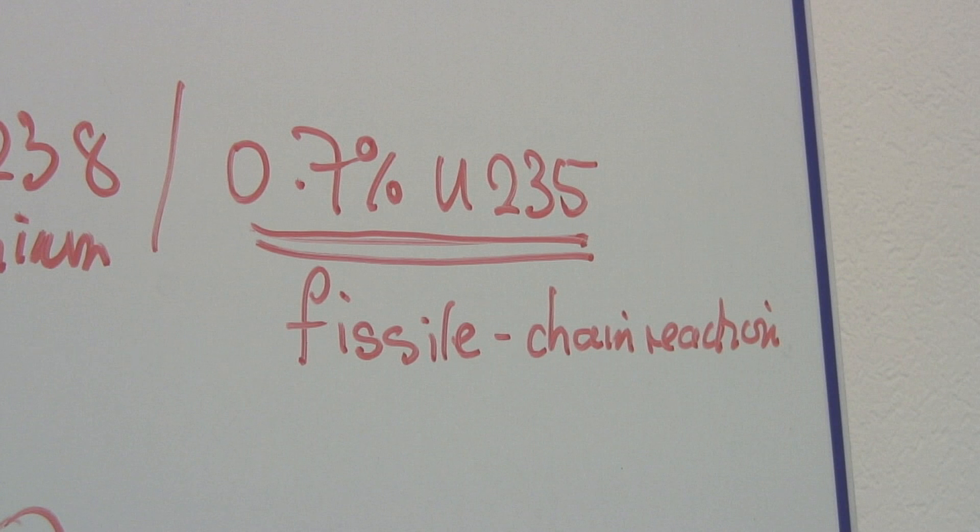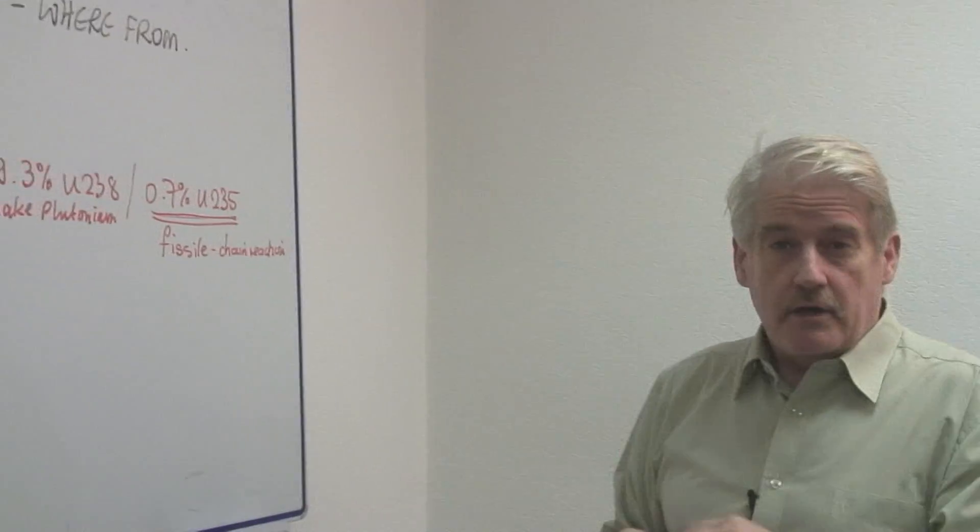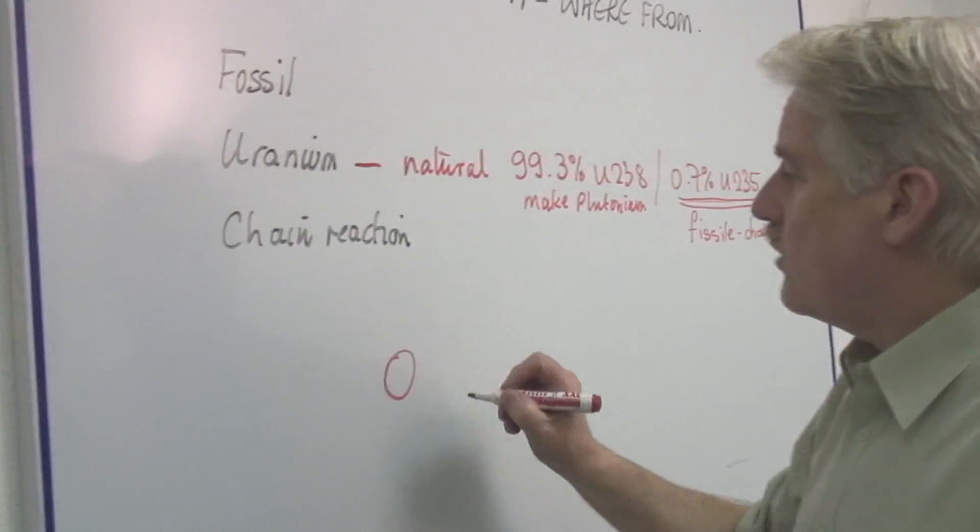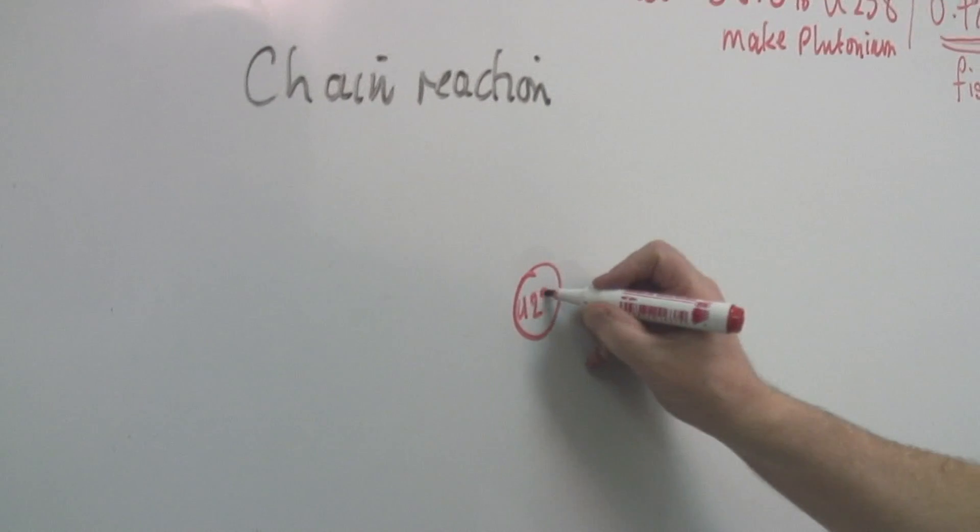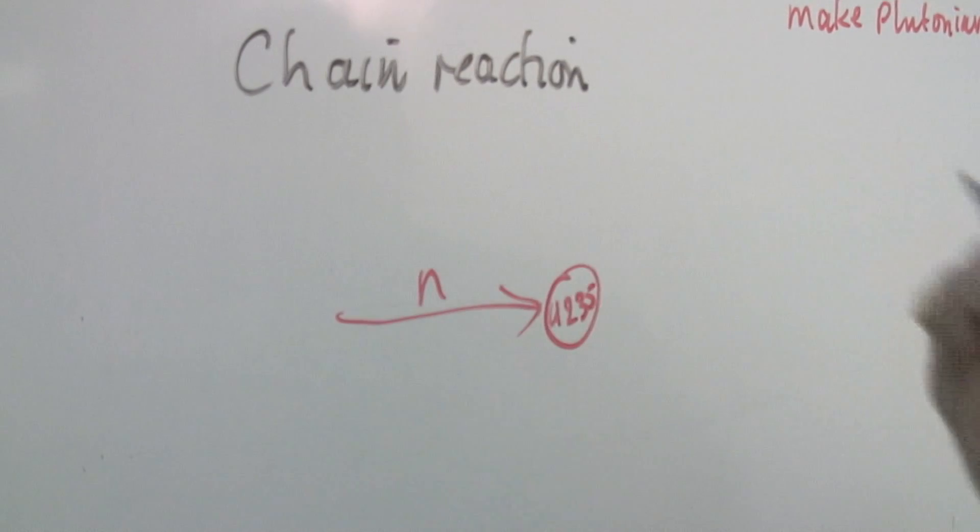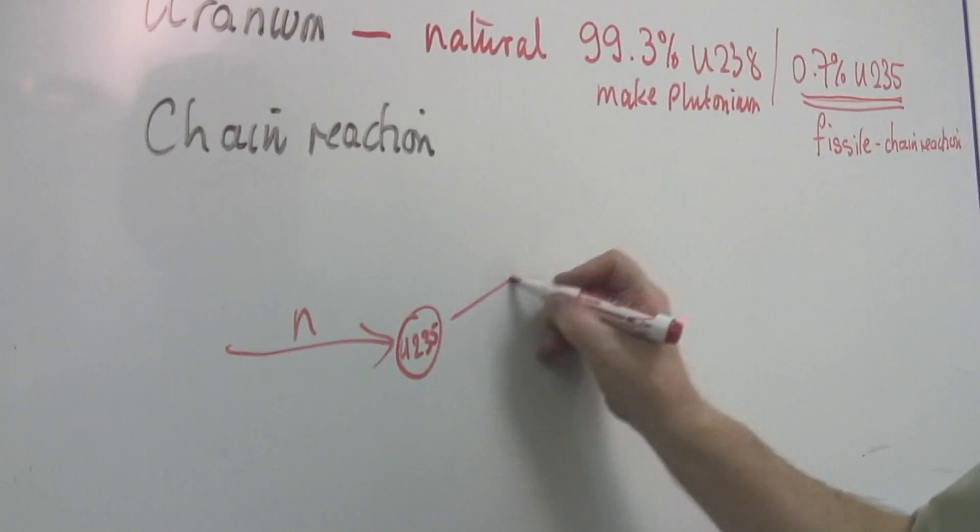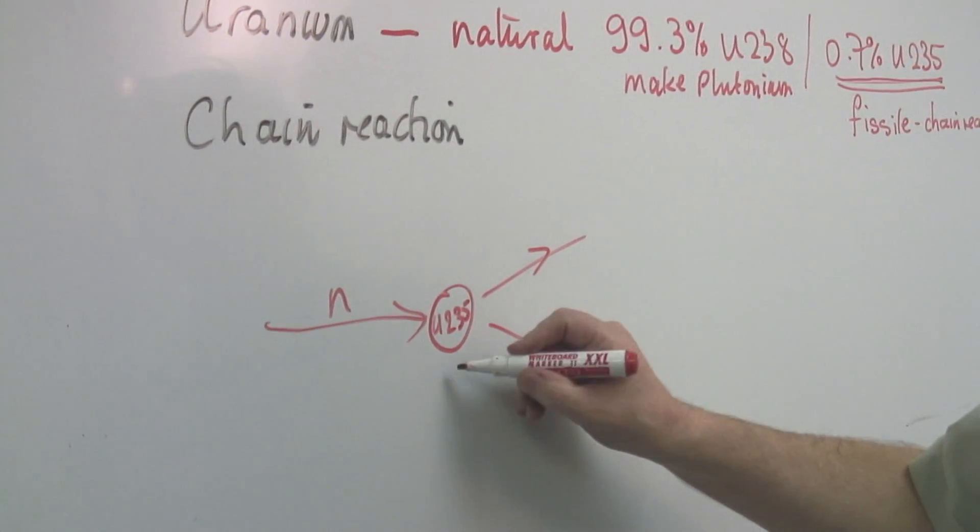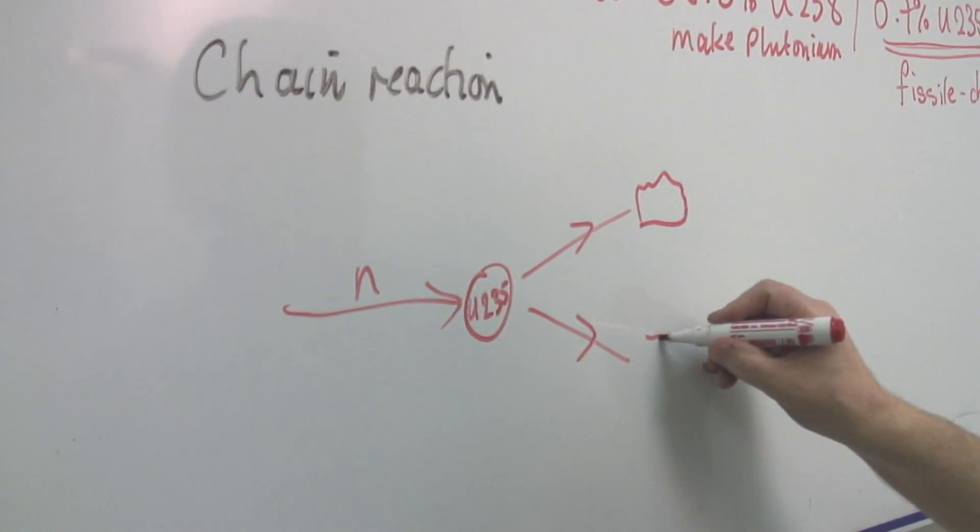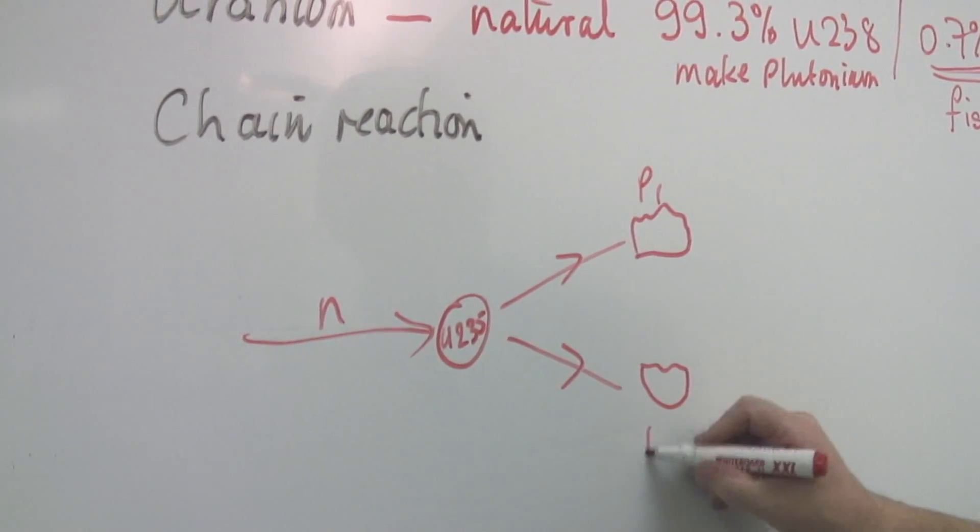So here we have the chain reaction. So whereabouts in this process does it occur? A chain reaction is where you have a particular atom, uranium-235. And when a neutron hits it, and there are neutrons around all the time, but when a neutron hits it, it actually undergoes a reaction where the uranium-235 actually splits into two bits. Two big chunks. And this is product one and this is product two.